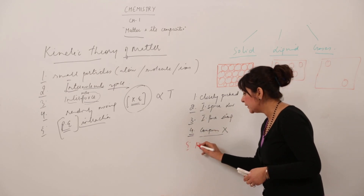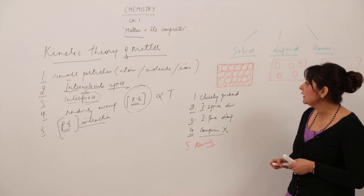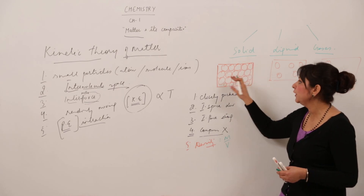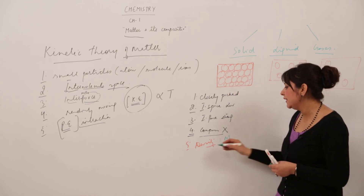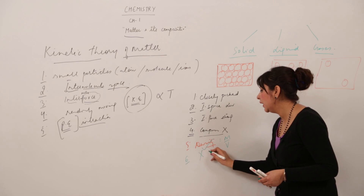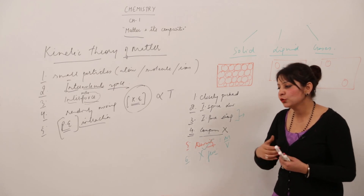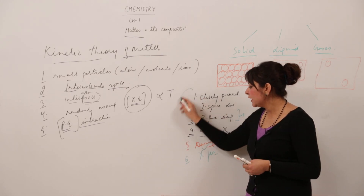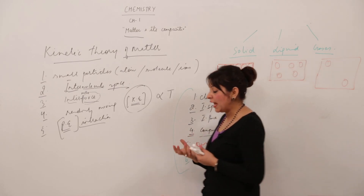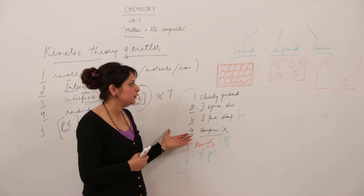When we talk about density, it is mass per unit volume. In a given volume of solid, there are so many atoms present, so the density is high. And can they flow? No, they can't flow, because the intermolecular force of attraction is so strong that it will not allow the atoms to go far from each other. So any substance which fulfills all these characteristics exists as solid.